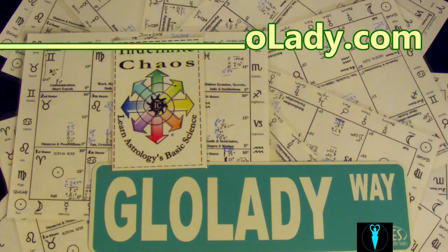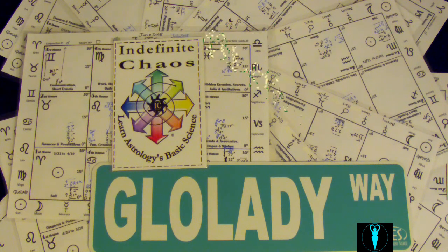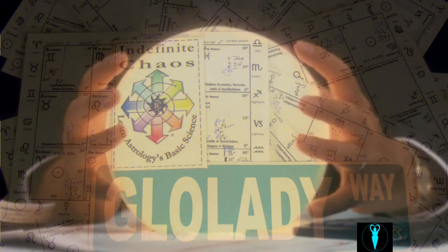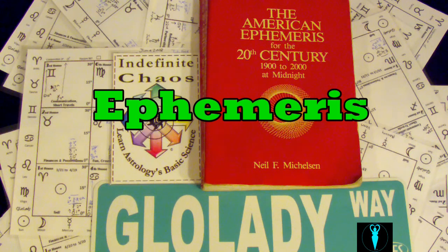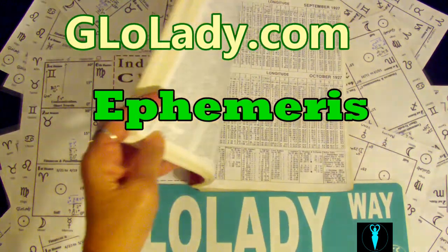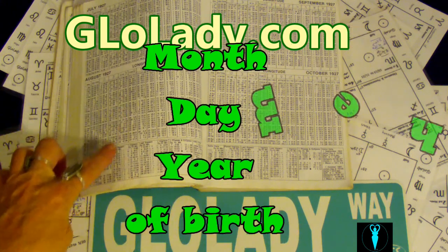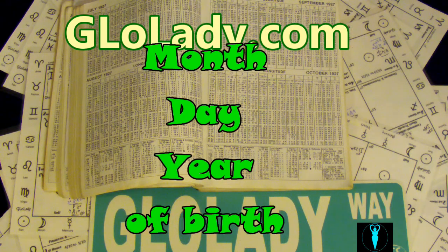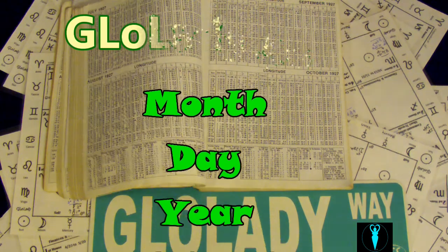Indefinite Chaos, Learn Astrology Basic Science is the Glow Lady way to learn how the planetary aspects affect our lives. By using an ephemeris, you can look up your birth date and see where the planets were on your date of birth.